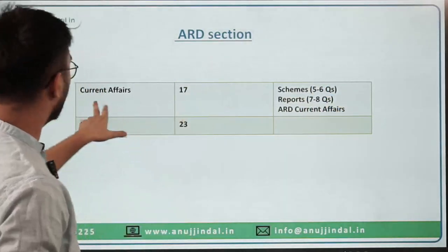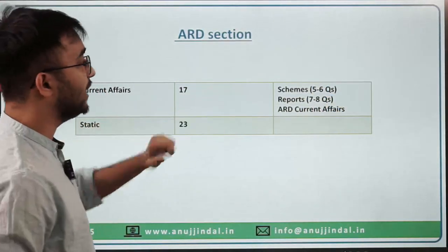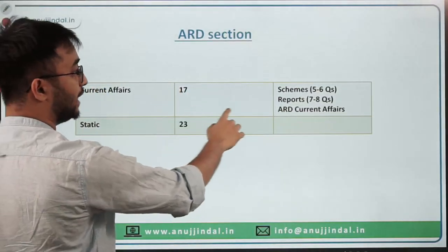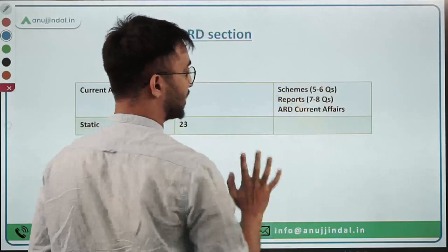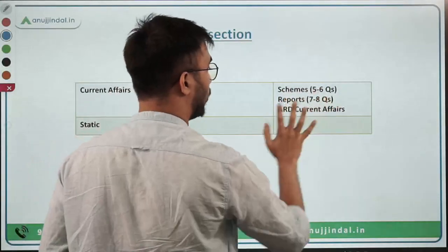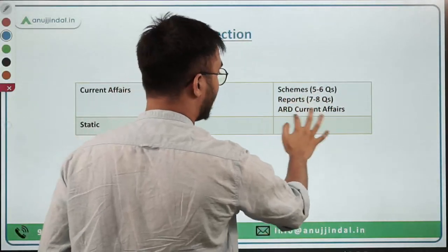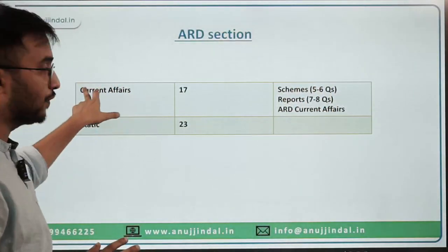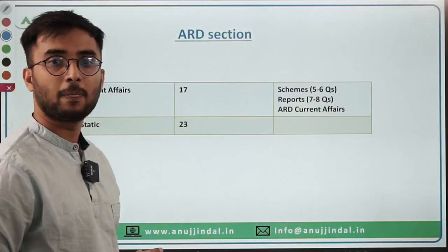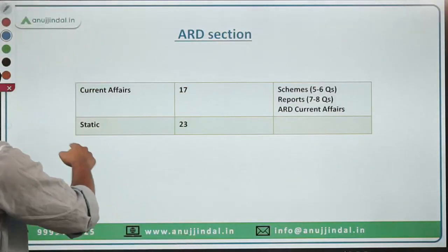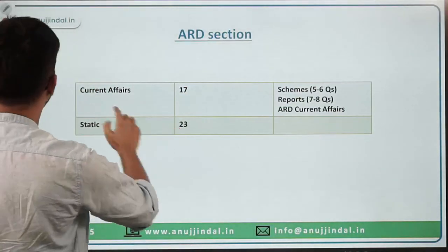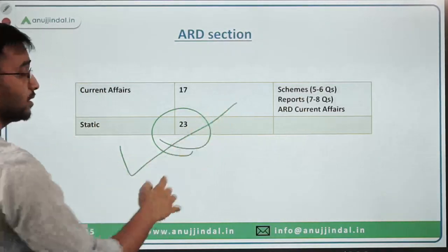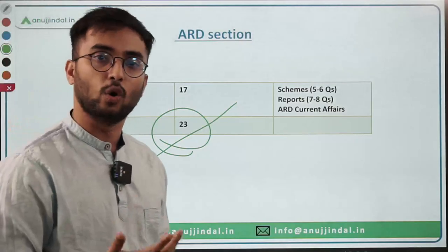In ARD current affairs, about 17 questions were asked — 5 to 6 from schemes, 7 to 8 from reports, and the remaining from other ARD current affairs. From ARD static, almost 23 questions came. This confirms that ARD static is very very scoring.